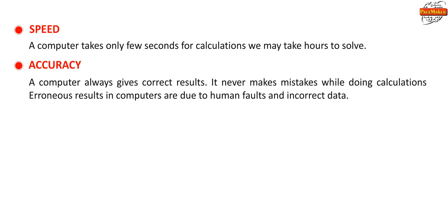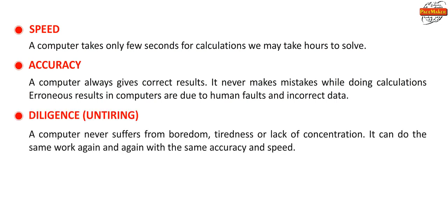Accuracy: A modern computer always gives correct results and never makes mistakes while doing calculations. Erroneous results in computers are due to human faults and incorrect data. Diligence (Untiring): A computer never suffers from boredom, tiredness or lack of concentration. It can do the same work again and again with the same accuracy and speed.